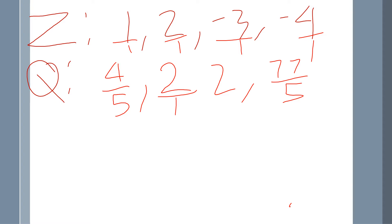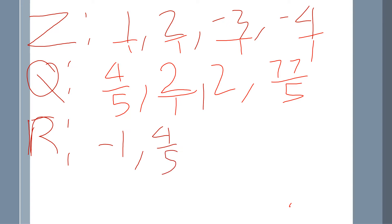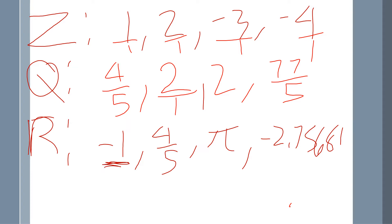Real numbers — we denote them with R, and we talked about that with domain and range. Real numbers could be negative 1, it could be 4 over 5, it could be pi (we know it's 3.14), it could be negative 2.175681. An integer is a real number. A rational number is also a real number. An irrational number like pi is also a real number.